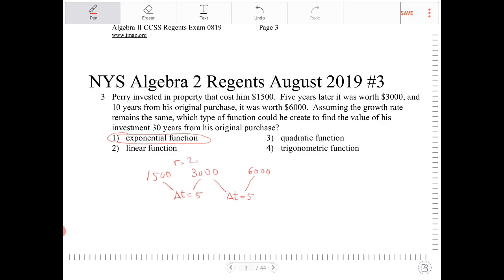r is equal to two each time. It's not a quadratic function because a quadratic function is squaring each successive term. And it's definitely not trigonometric because trigonometric is cyclical, meaning we have cycles and the function repeats itself. So the only option that makes sense is option one.